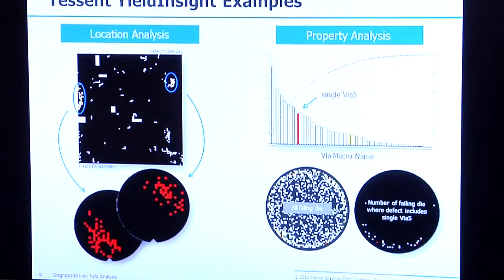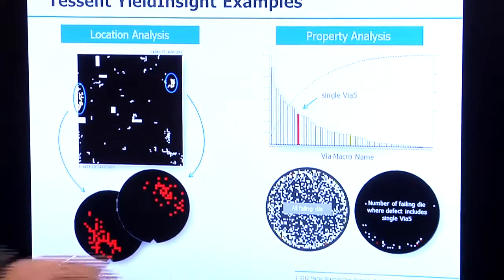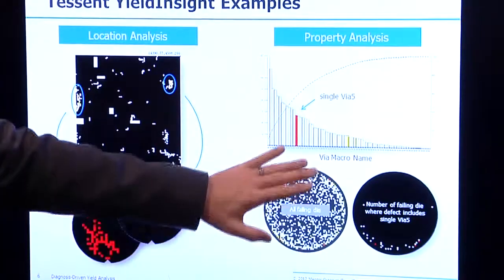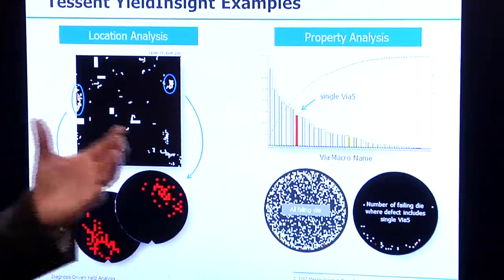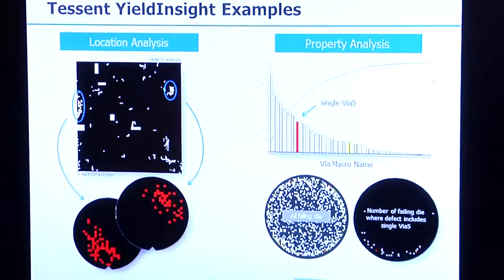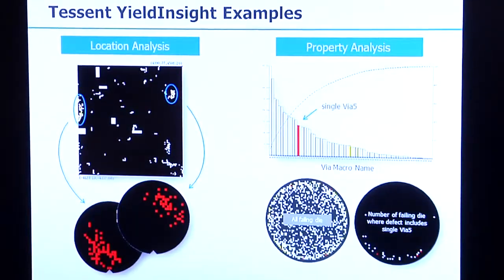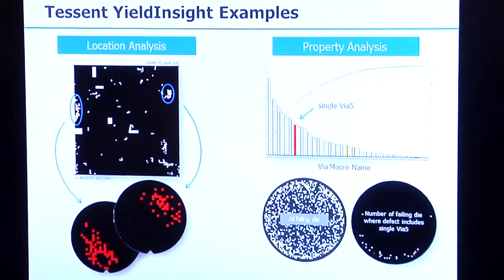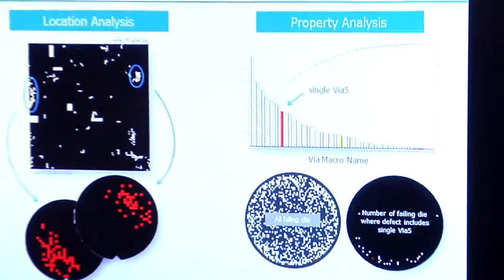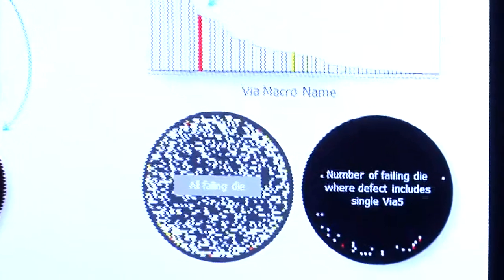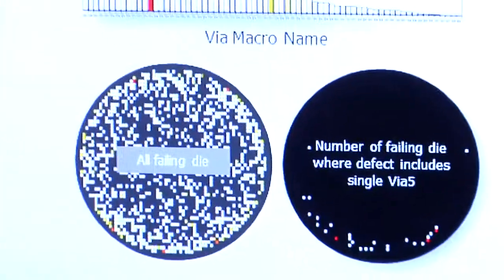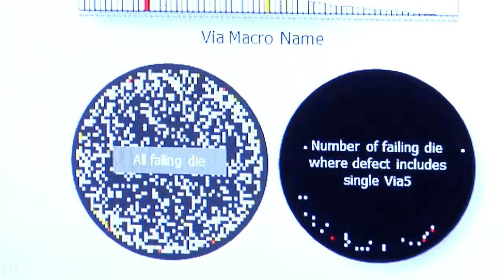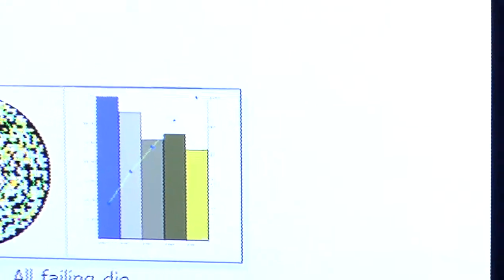We would expect any defect type to have roughly the same defect distribution as the total set of failing die. In this case, we saw that one particular type of failure had a very different distribution than the total defect distribution, and that's what makes it particularly interesting.